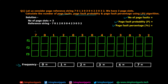Starting with the first request — page 7. All three page slots are empty, so this is a page fault. Page 7 is loaded into memory. Second request — page 0. We don't have 0 in the frames, so again a page fault; 0 is written in. Third request — page 1. We have 7 and 0 but not 1, so again a page fault; 1 is loaded. In these first three steps we have page faults. Don't forget: we must also increment their frequencies. The frequency of 7 is 1, frequency of 0 is 1, and frequency of page 1 is also 1.